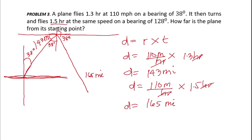By alternate interior angles, this is 38 degrees. And since this is 38 degrees, by complementary angles, the other angle is 52 degrees, giving a right angle of 90 degrees at the turning point. We now find the distance from the plane to the starting point.